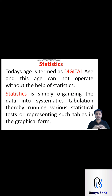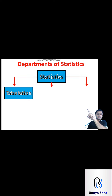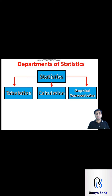Statistics is basically organizing data in a proper format, applying some calculation tests or statistical tests in order to understand the trend of the data, and finally representing the data in a graphical form. Statistics has three major departments: tabulation, calculation, and graphical representation. The basic statistical tests are called measures of central tendency, and there are many more different statistical tests.